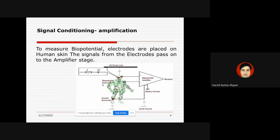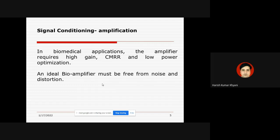To measure bio-potentials, electrodes are placed on the human skin. If someone is going for an ECG, electrodes are placed on the human body and a signal is recorded in the ECG machine. These signals from the electrodes pass through the amplifier stage first, and then further processing takes place. In this image, electrodes are placed on the human body and the output signal is sent to the bio-potential amplifier.